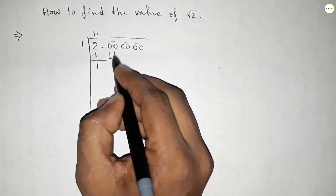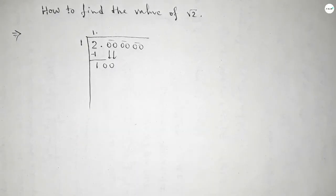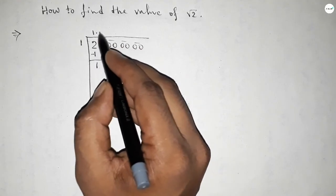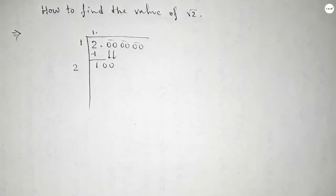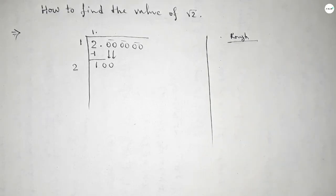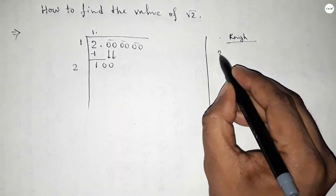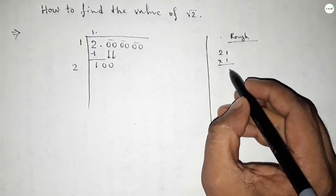Now putting the 2.00 here. Next, taking double of this, so double of 1 equals 2. Now roughly discussing the calculation.